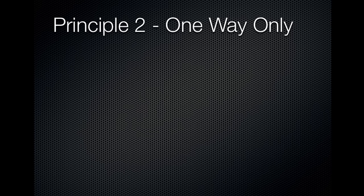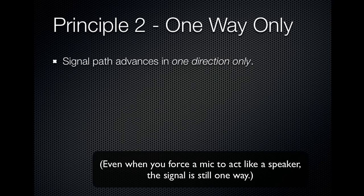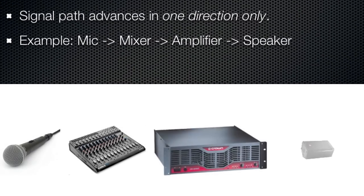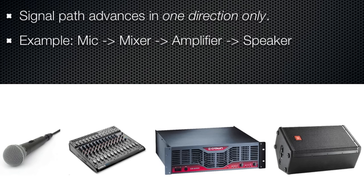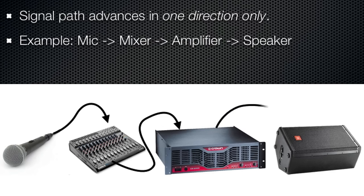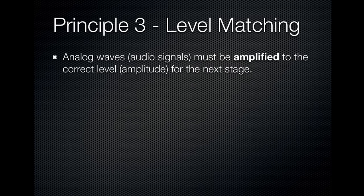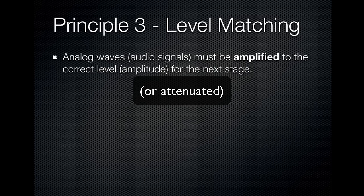The analog signal path is one way only. For example, in a typical simple live sound setup, you would have a mic, a mixer, an amplifier, and a speaker. The microphone takes sound from the acoustic world and outputs it into the mixer; the mixer goes into the power amplifier, and the power amplifier goes into the speaker — one way only. Connecting a mic directly to a passive speaker doesn't work, and the reason why is the next principle: level matching. Analog waves have to be amplified to the right amplitude for the next stage in the process.